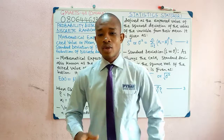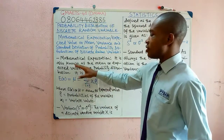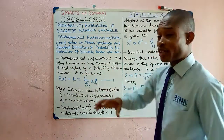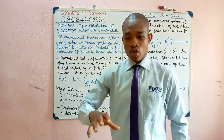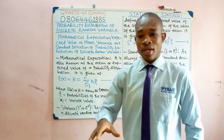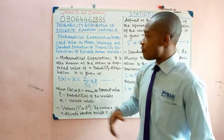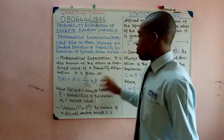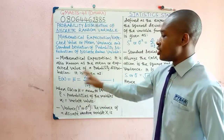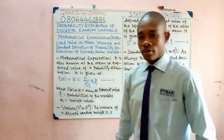So we start first by looking at the mathematical expectation. It's also called the mean or the expected value of a given probability distribution.